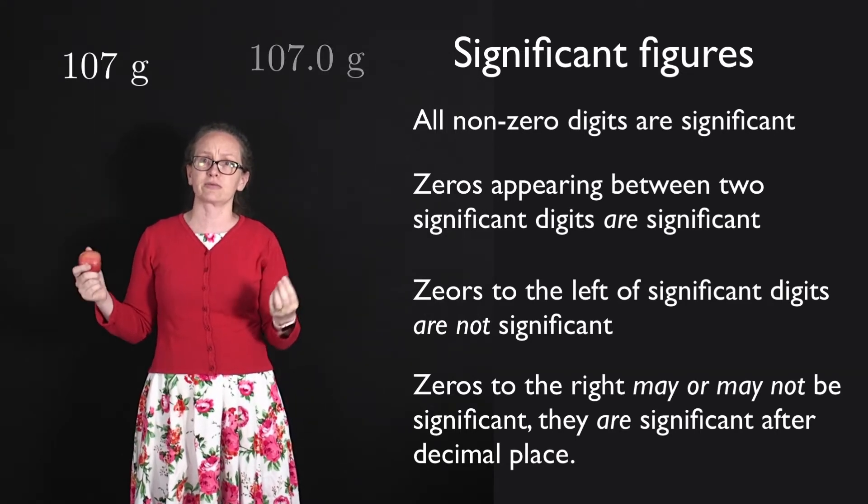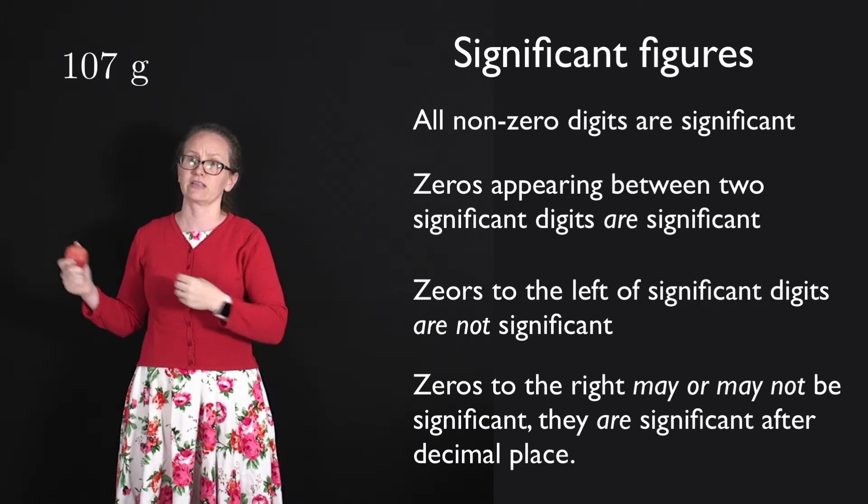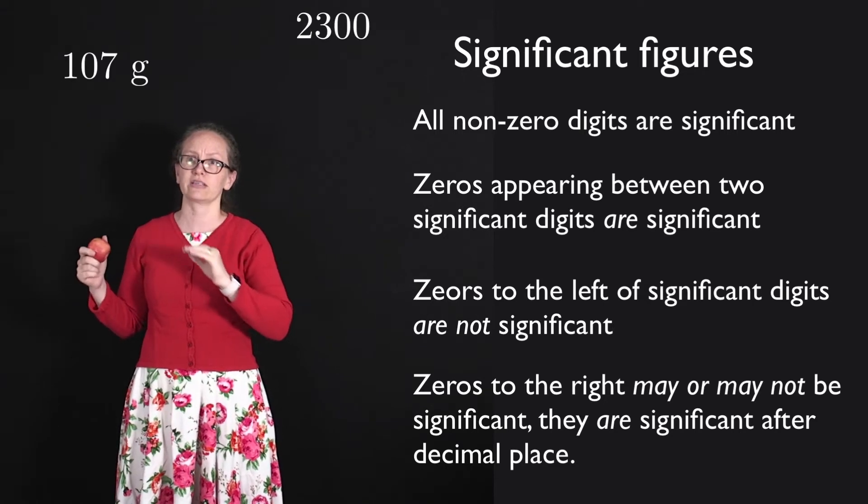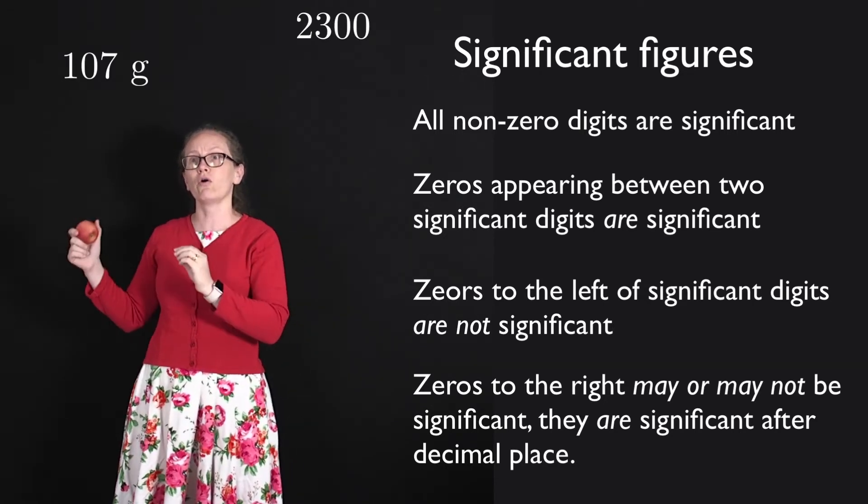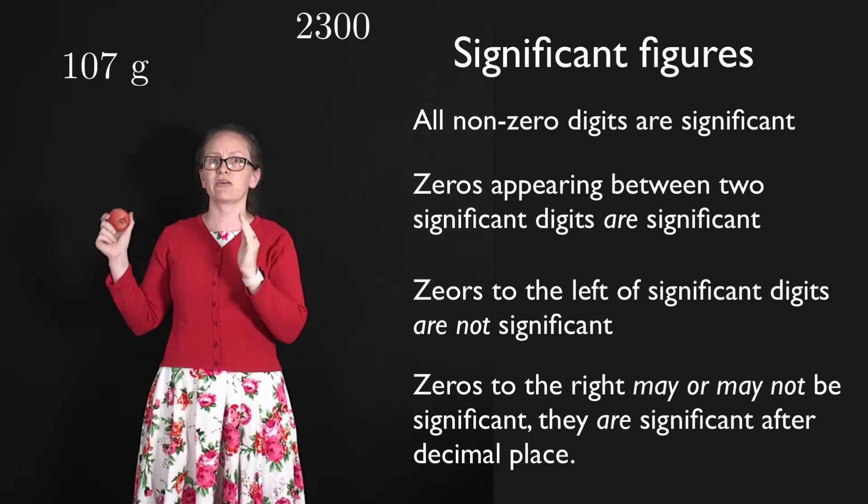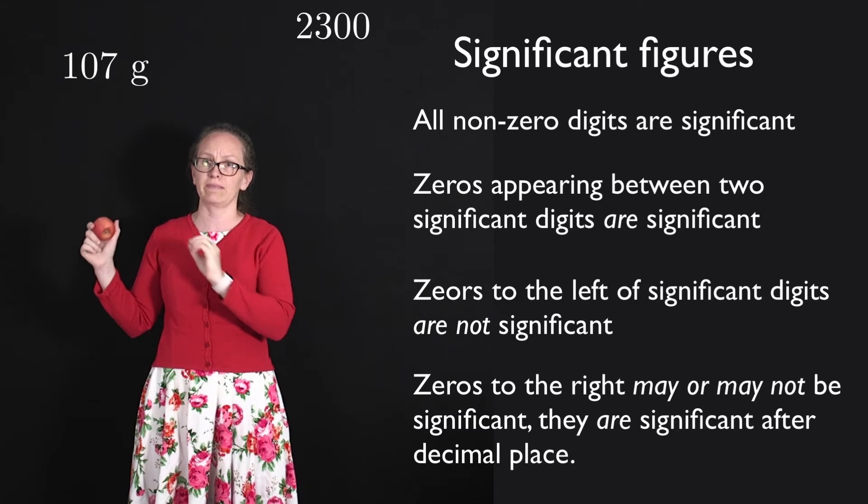Now if there's no decimal place, then the zeros may or may not be significant. So consider the number 2300. This can have two, three or four significant figures. The zeros at the end may be significant or they may just be placeholders.